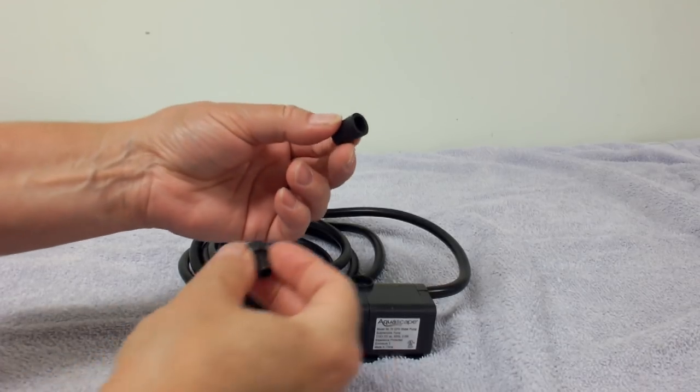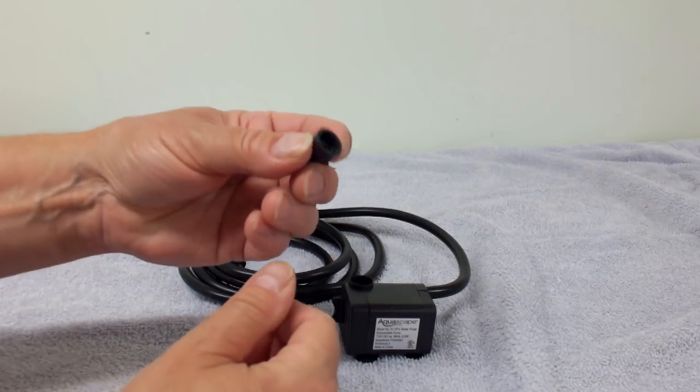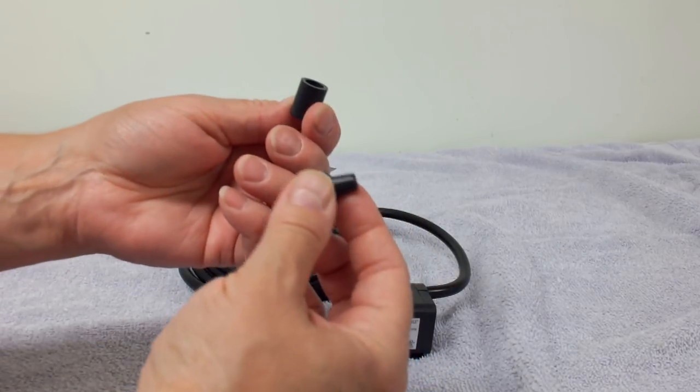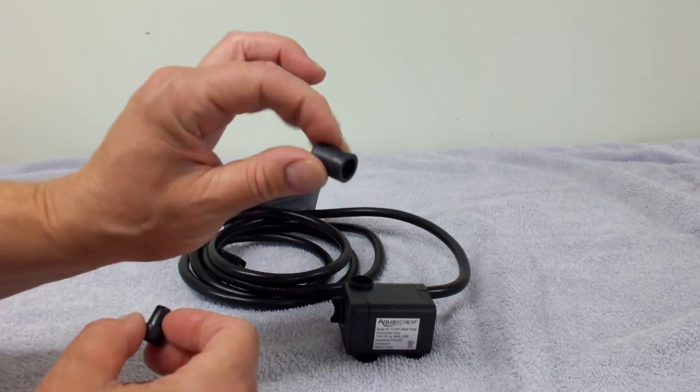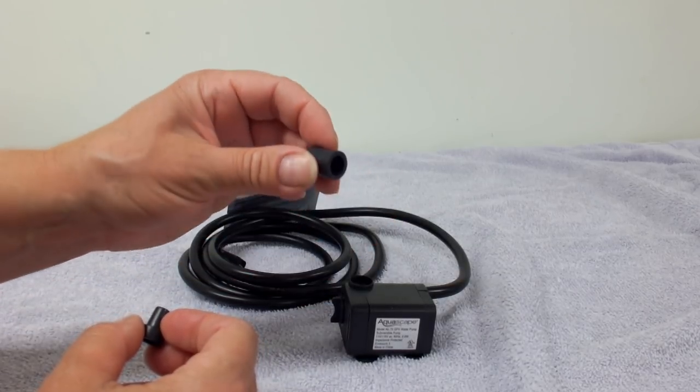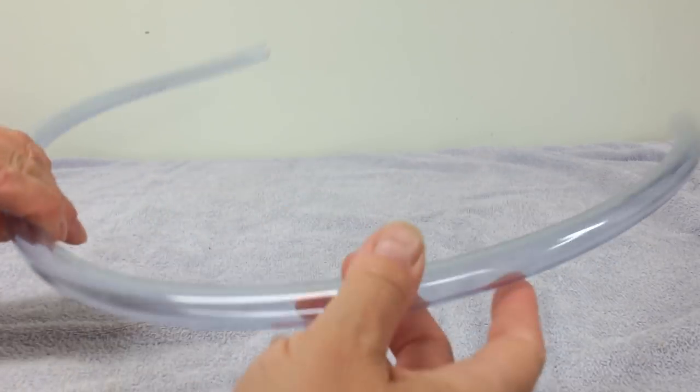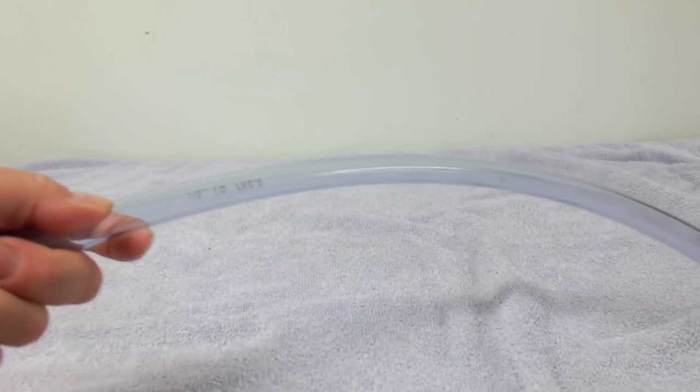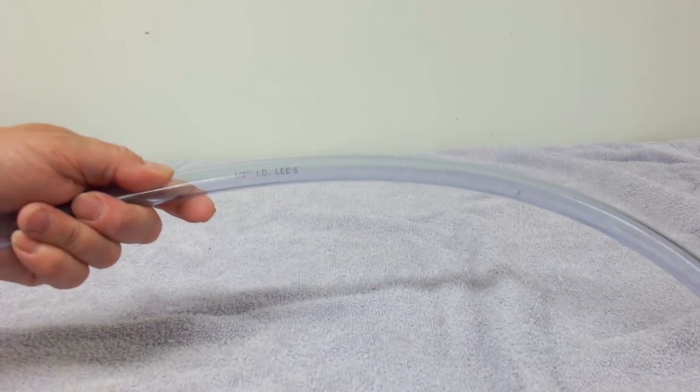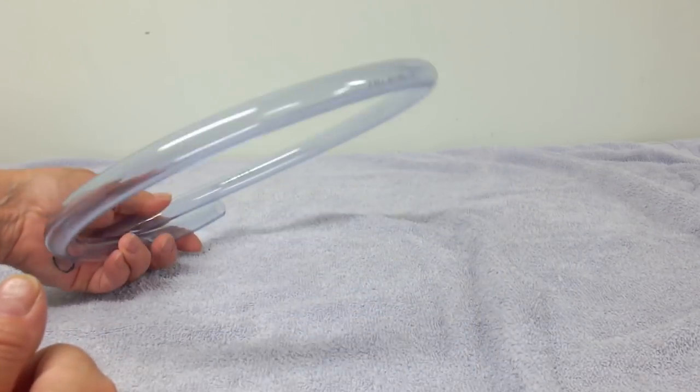Okay now the pump came with two adapters, one's a half inch and one's a quarter inch, so it depends on what size hose you want and I am gonna pick the half inch because that's the size hose that I would like. And then you need some hose. This is a half inch and this is the size that I chose to make my bird bath.